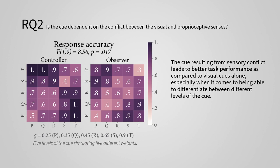This is a heat map of participant responses to which can was heavier in the two conditions. Controller on the left and observer on the right. In this heat map, if more participants got the answer right, we see darker colors. We see darker colors on the heat map for the controller condition. What we find is that the cue resulting from sensory conflict leads to better task performance as compared to visual cues alone, especially when it comes to being able to differentiate between different levels of the cue.